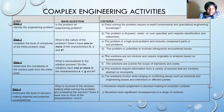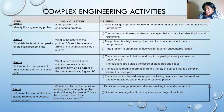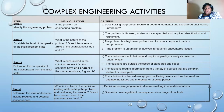Step four: determine the level of decision-making required and potential consequences. Does the decision require judgment, and do the decisions have significant consequences across a range of contexts?